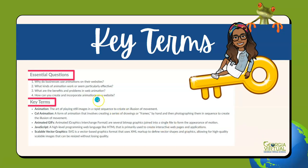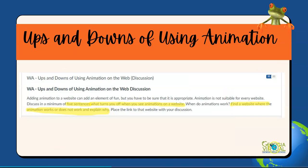Now let's jump into some key terms. Remember each module has key terms and essential questions. Your essential questions for this module are: why do businesses use animations on their websites? What kind of animation work seems particularly effective? What are the benefits and problems in web animation? And lastly, how can you create and incorporate animations on a website? Your key terms are animation, cell animation, animated GIF, JavaScript, and scalable vector graphics. Make sure you read the definitions carefully and are able to use these terms in a sentence.